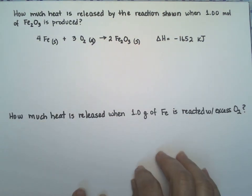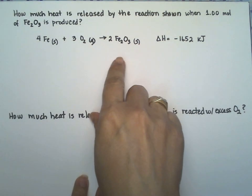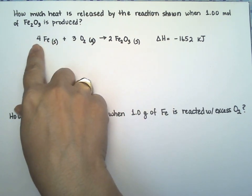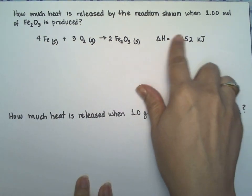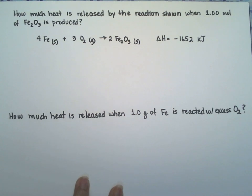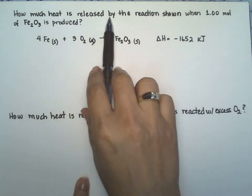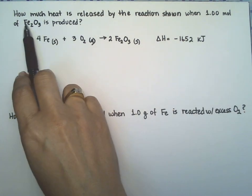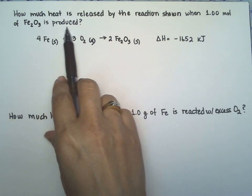This question is important because it talks about the relationship between the coefficients of the equation and the delta H that you get. How much heat is released by the reaction shown when one mole of di-iron trioxide is produced?